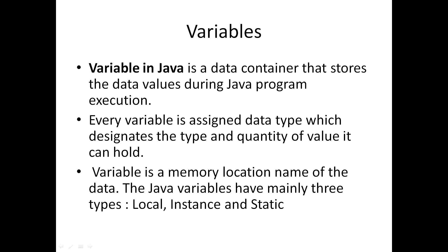Every variable should be assigned a data type which designates the type and quantity of value it can hold. That means what type of value you want to store in a particular variable is decided by the data type. Whenever we declare a variable, some memory location will be assigned to it based on the data type.